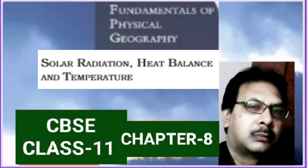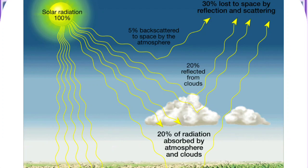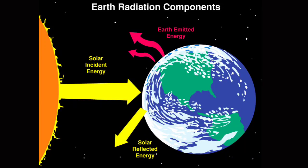The atmosphere is largely transparent to the incoming solar radiation, as the insolation is in short waves. The gases in the atmosphere are not able to absorb the incoming solar radiation, as they cannot absorb the short waves of the insolation. The insolation reaches the earth's surface and heats it, as the short waves can be absorbed only by solid and liquid particles, whereas the atmosphere almost remains transparent to the incoming solar radiation.